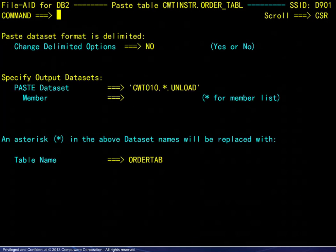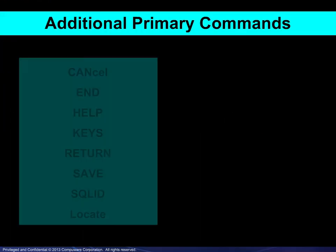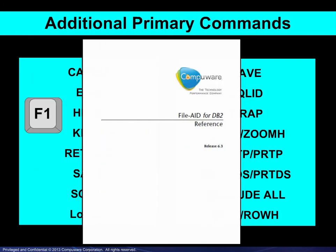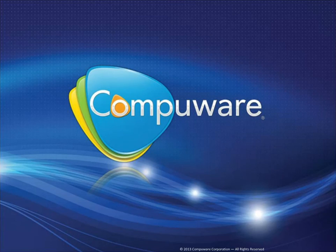There are numerous additional primary commands that you may wish to explore on your own. The online tutorial is always available by pressing F1, and the full FileAid for DB2 reference manual may be downloaded from Frontline. This concludes this module. Thank you.